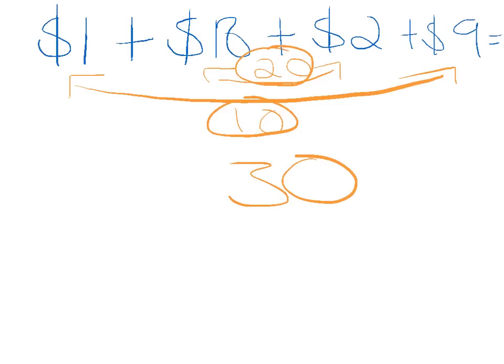In this one here we have one dollar plus 18 dollars plus two dollars plus nine dollars. So very quickly we can see one and nine go together because they make 10, and then 18 plus 2 make 20. So the total being 30 dollars.